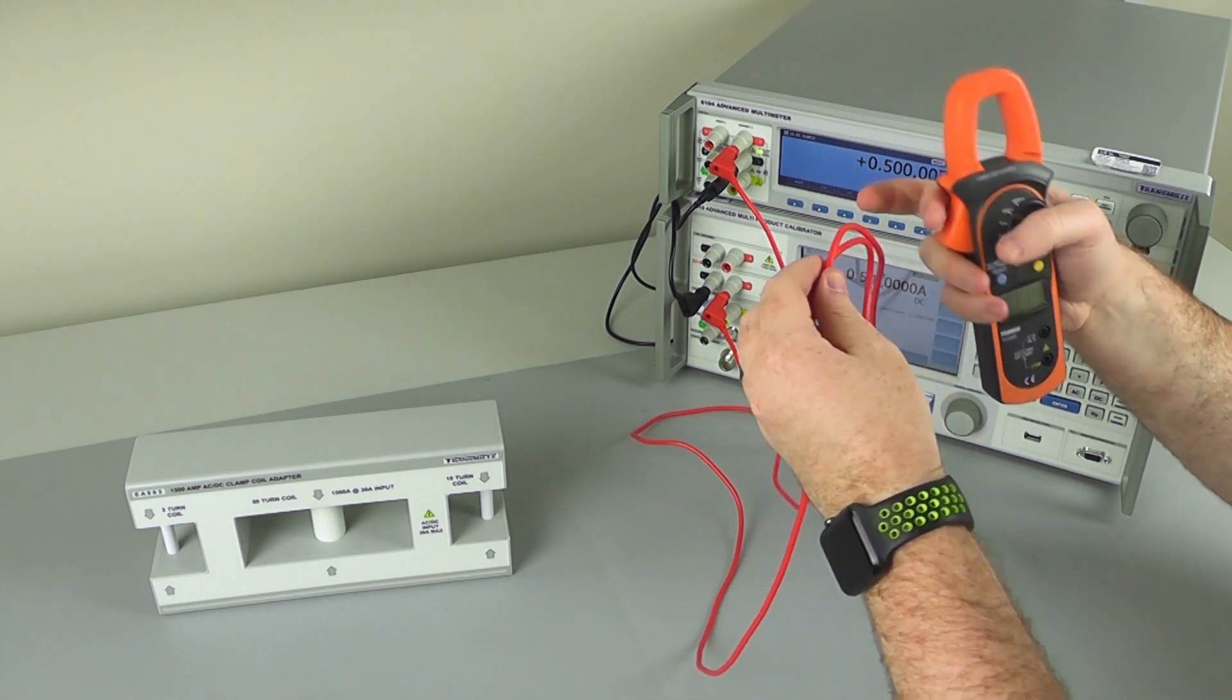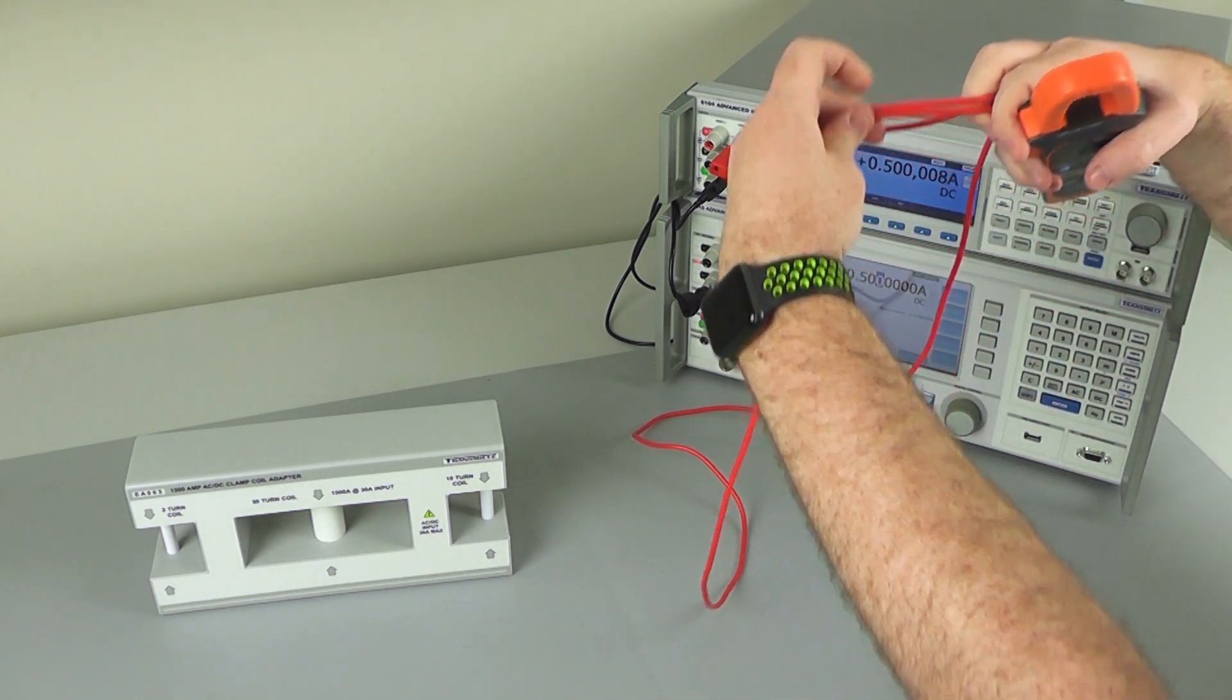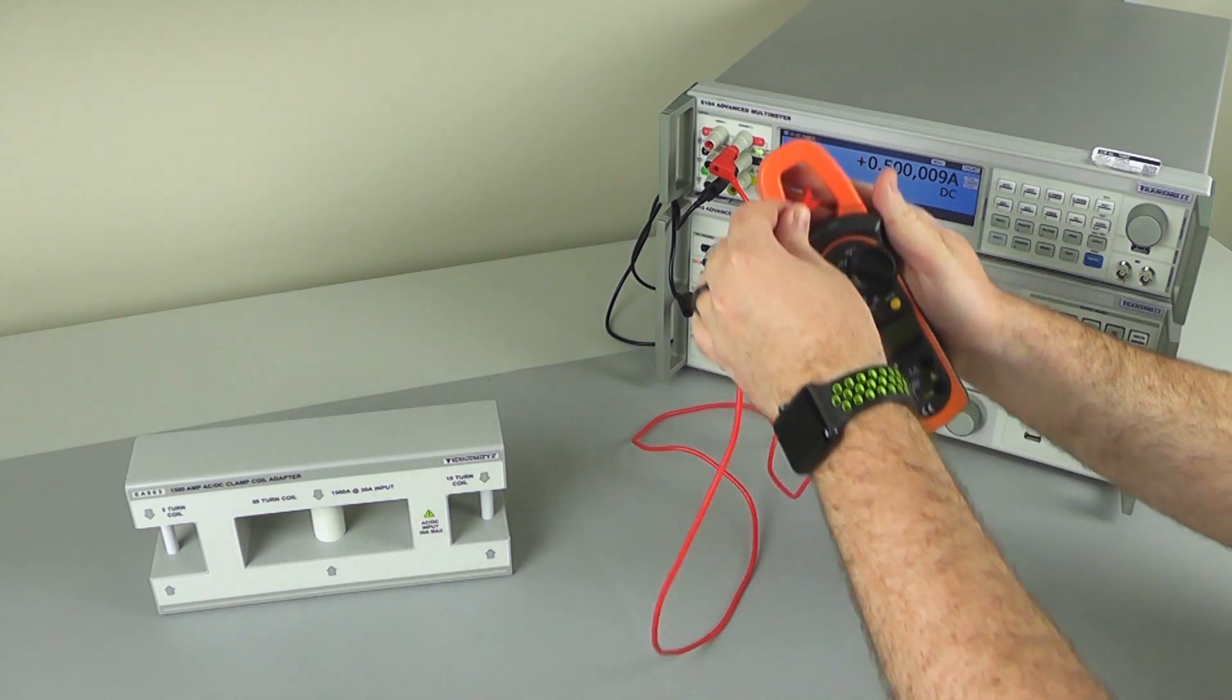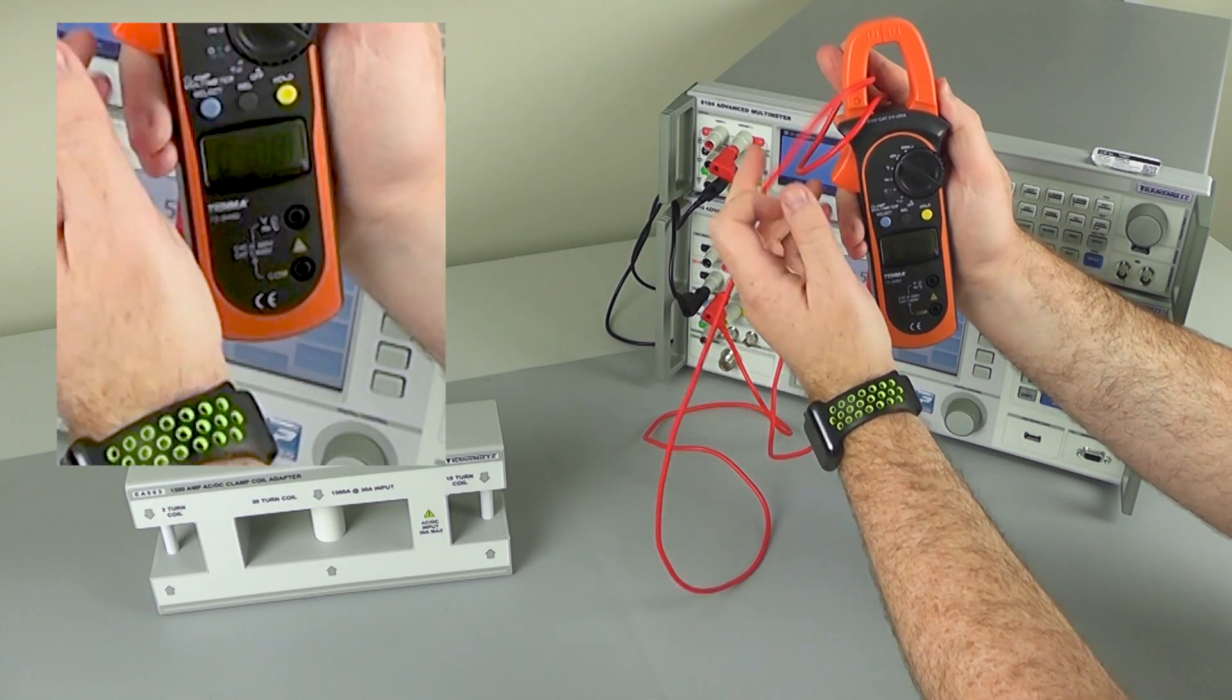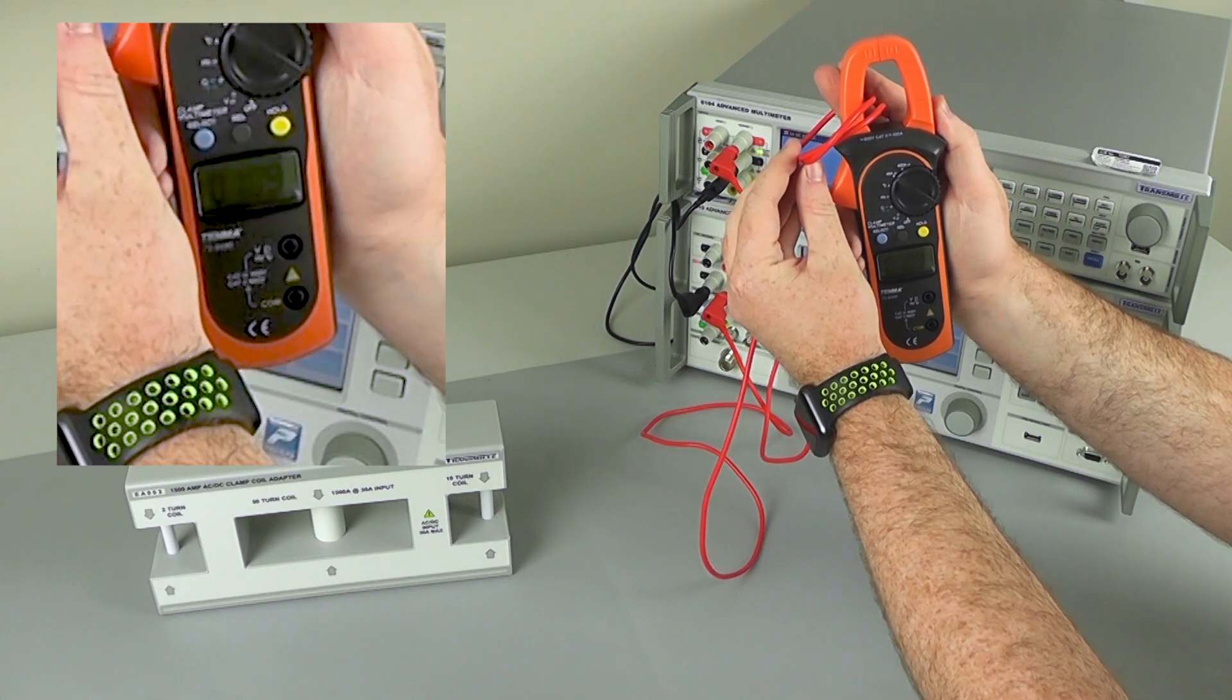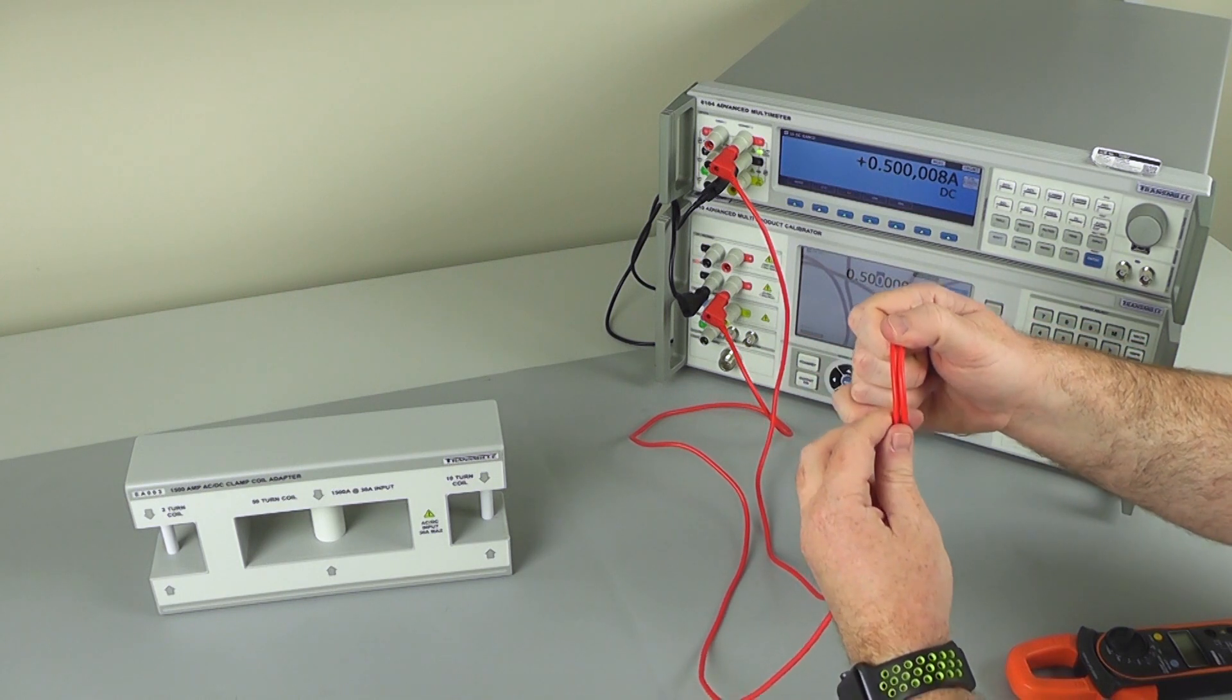So I've created a loop, and at this point here, we can see that we have two turns of the wire. So when I place this through the center of my clamp meter, we are now reading double the original current. One amp. And this will scale for as many turns as your current source is capable of driving.